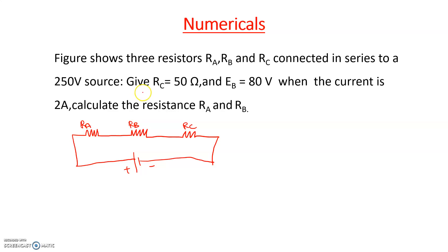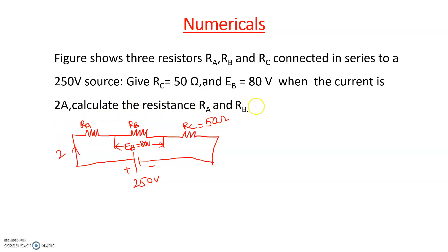Let us see a numerical example relevant to a series circuit. Three resistors RA, RB, RC are connected in series to a 250-volt source. RC is equal to 50 ohms and the voltage across RB (EB) is 80 volts. When a current of 2 amperes flows, calculate the resistances RA and RB. In a series circuit, the current through all resistors will be the same — here 2 amperes flows through RA, RB, and RC.